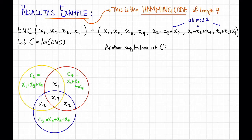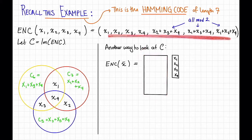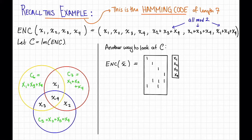We can view the encoding map as multiplication by a matrix mod 2. In more detail, we can write the encoding of a vector x — think of x as the vector of length 4: x1, x2, x3, x4 — as a matrix-vector product. This matrix captures the linear relationships: the first four bits are just x1, x2, x3, x4; the fifth bit is x2 plus x3 plus x4; the sixth bit is x1 plus x3 plus x4; and the seventh bit is x1 plus x2 plus x4. Everywhere I haven't drawn a 1, there should be a 0, and all of this is mod 2. If we label this matrix G, then the encoding of x is just G times x mod 2.